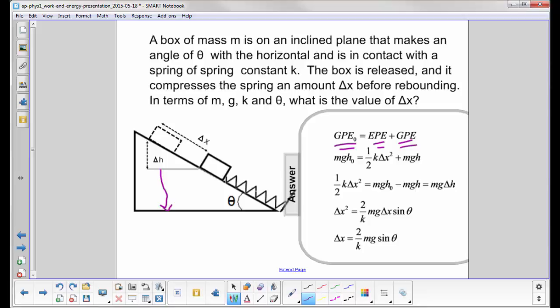One last step, divide out this delta X and I have my final answer here that the distance the box will move down the incline is 2 over K times mg sine theta.